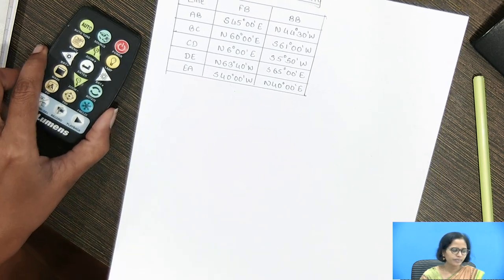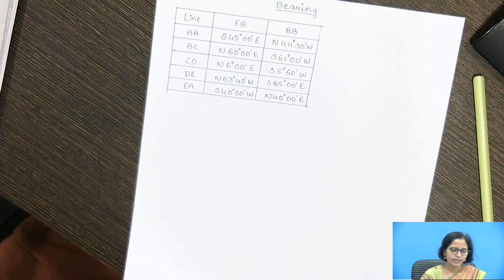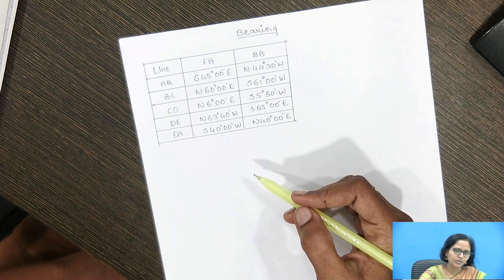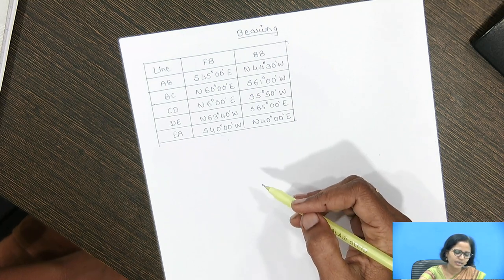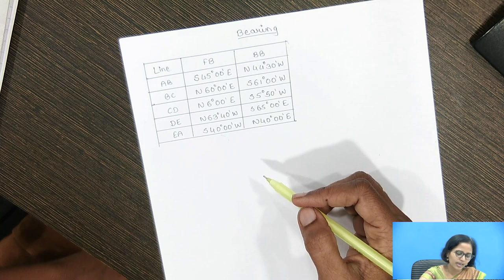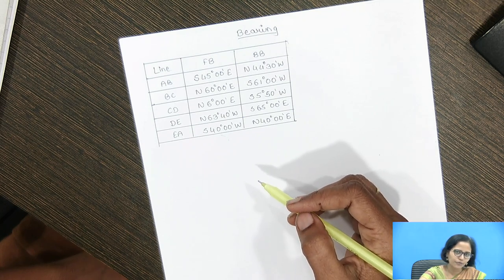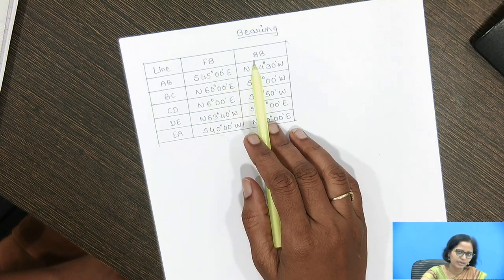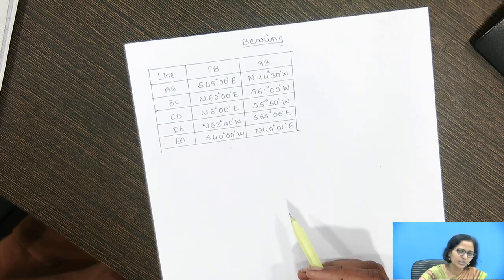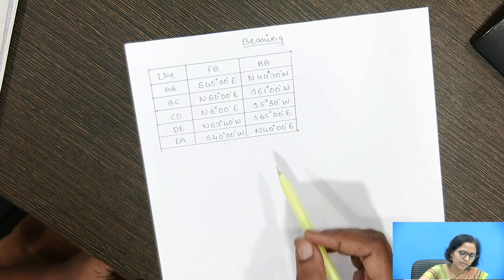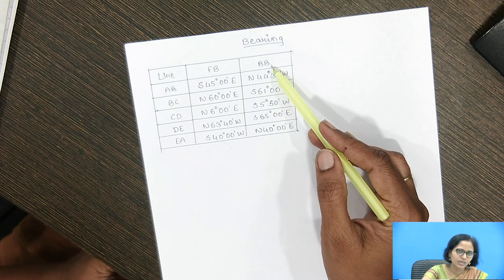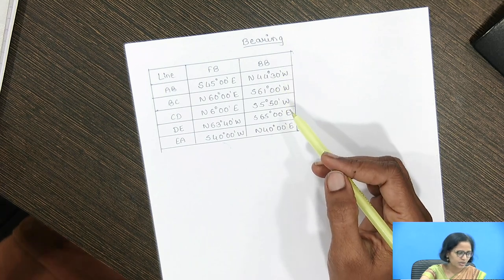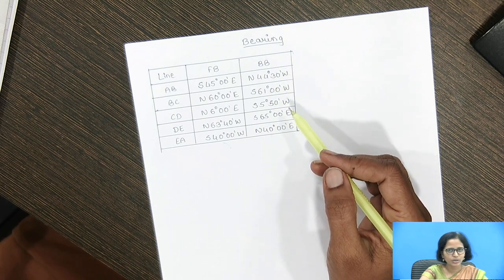Bearing is nothing but the angle of a survey line with respect to any specified point. It is the horizontal angle which that line makes with the reference point. In bearing we have the forward bearing and the back bearing. Forward bearing is measured in the forward direction and back bearing is measured in the backward direction. Regarding quadrantal bearing, the bearings are always measured with respect to north or south.